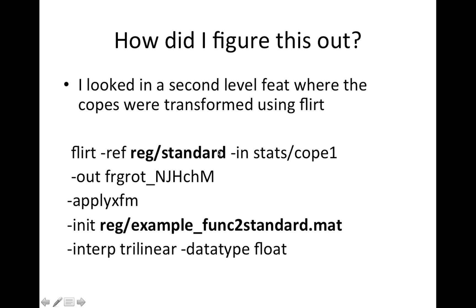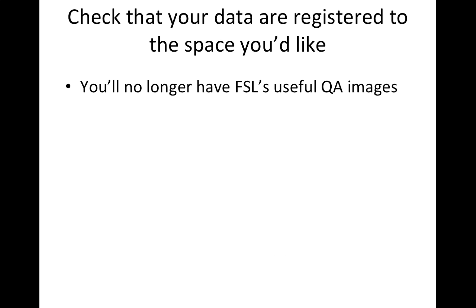These are the only two things we need to fix. We're going to run our level one analysis as usual, then overwrite these two files in the reg directory. We'll change the standard image to be what we want — if you're using fMRIPrep it won't be the MNI template exactly, because it retains the same voxel dimensions as the original data but moves it into standard space. We need to replace the .mat file with an identity matrix, which will not move the image at all.